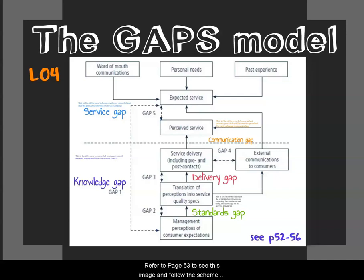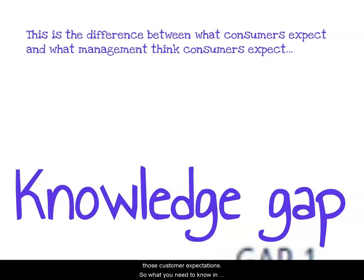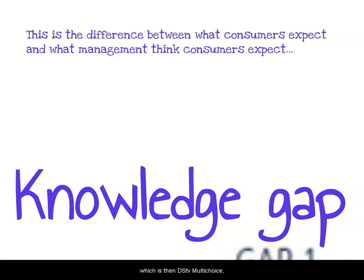The knowledge gap reflects the difference between customers' expectations and the organization's perceptions of those customer expectations. For example, if you have DSTV or Showmax Pro, you as a customer would expect new content on a regular basis, but management thinks customers expect repeats — that is the knowledge gap. How can they close it? DSTV or Multi-Choice can close the gap by developing a better understanding of customer expectations, for instance by conducting research or asking customers on social media what they expect, and then acting on that feedback.